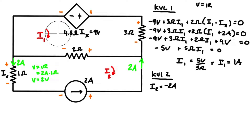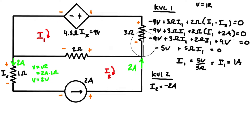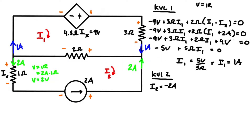Rearranging: i1 equals positive five volts divided by five ohms, so i1 equals one amp. That means one amp flows around the top loop. At the junction: one amp in plus two amps in gives three amps out, and three amps in equals three amps out on the other side.